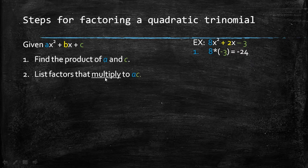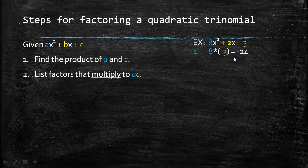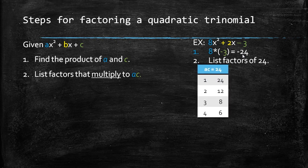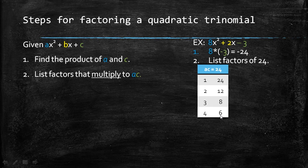Step 2, list the factors that multiply to ac. So I want all of the factors that multiply to 24, and I like to list them in order from least to greatest. So I know 1 times 24 is 24, 2 times 12 is 24, 3 times 8 is 24, and 4 times 6 is 24.